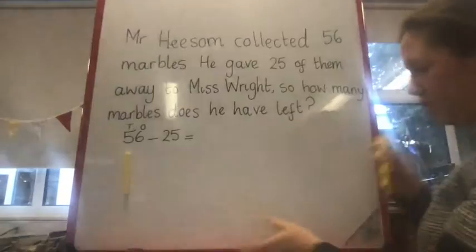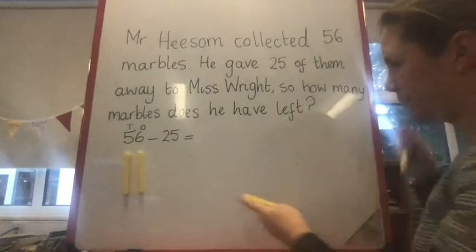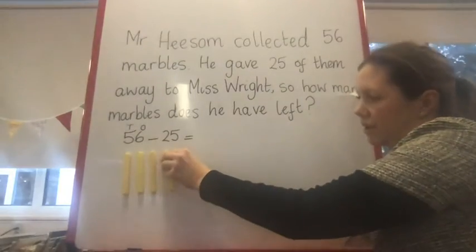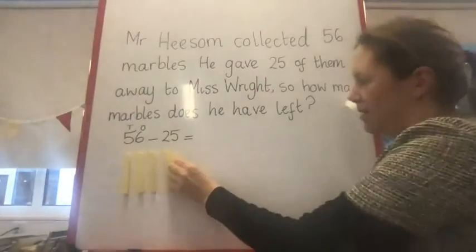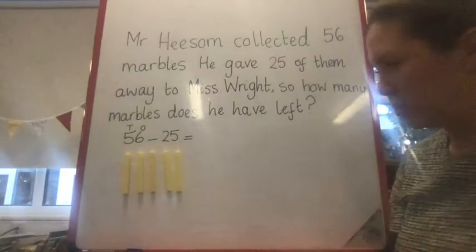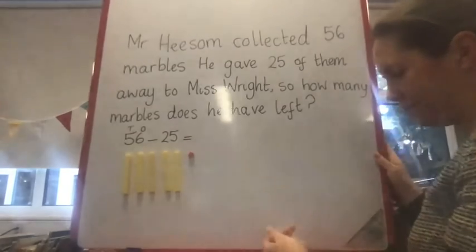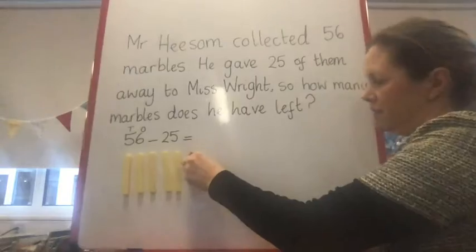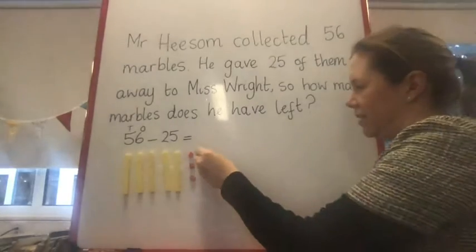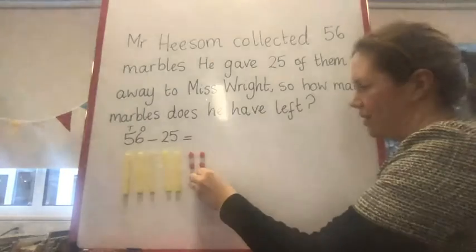I'm going to place the tens: 10, 20, 30, 40, 50. There we go, we've got our five tens, and now I've got to add my six ones: 51, 52, 53, 54, 55, 56.